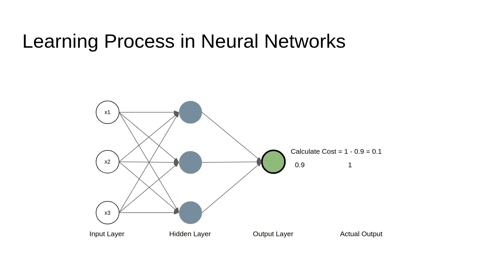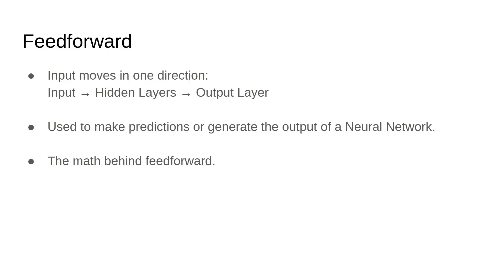Now let's look at feed forward. Feed forward is the process where the inputs are propagated through the neural network starting from the input layer, through the hidden layers, and finally reaching the output layer. Before we get into feed forward, let's take a look at how an artificial neuron works.